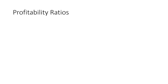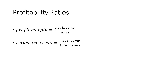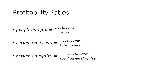Profitability ratios essentially talk about net income, also called profit after tax or earnings after tax. Profit margin is the ratio of net income divided by the top line — revenue or sales — representing bottom line over top line. Return on assets is the same net profit divided by total assets on the balance sheet. Return on equity is total profits divided by owner's equity, or owner's capital.